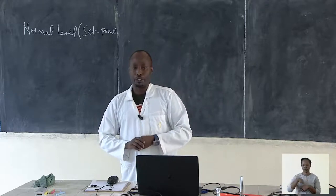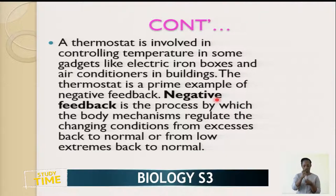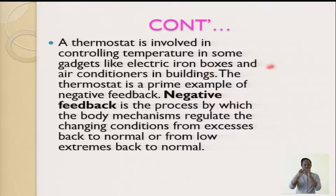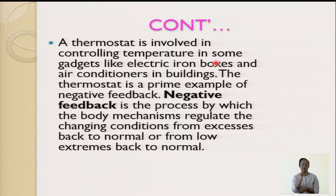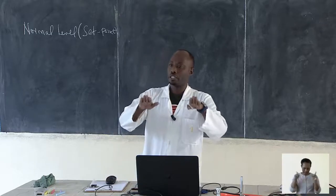Previously, we talked about what you call normal regulation — regulating the temperature internally. It is also involved in controlling the temperature in some gadgets, like in an electric iron box and in air conditioners. These iron boxes are normally used to remove creases on a piece of cloth, and you regulate them. We also have air conditioners in buildings — these also have to be balanced. Our body does the same to regulate the internal environment.